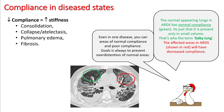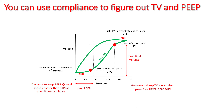One goal in treating these patients is to prevent overdistension of normal areas. You can use compliance to guide optimal tidal volumes and PEEP. In short, you want to keep tidal volumes low so that pressures do not cross the upper inflection point or exceed a plateau pressure of more than 30 cm H₂O.